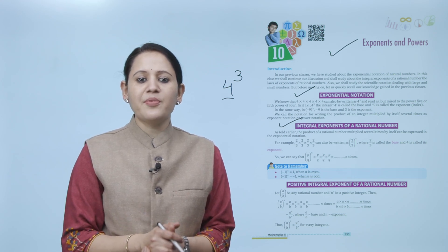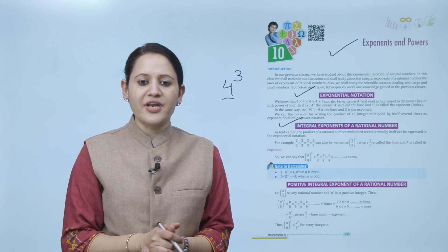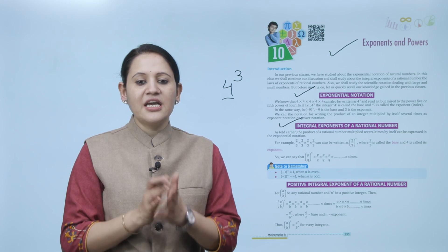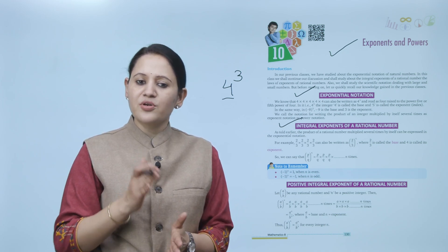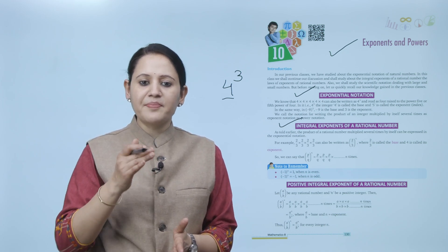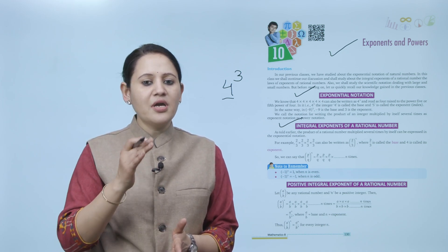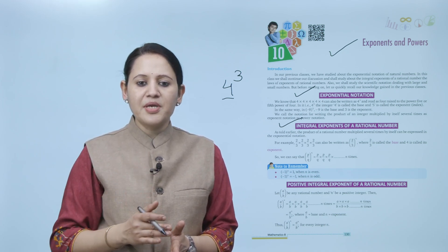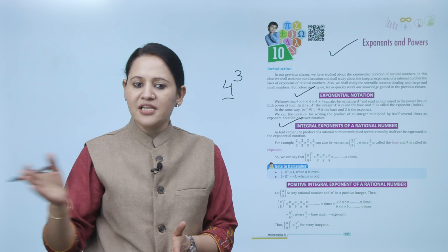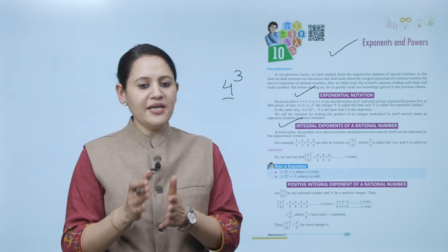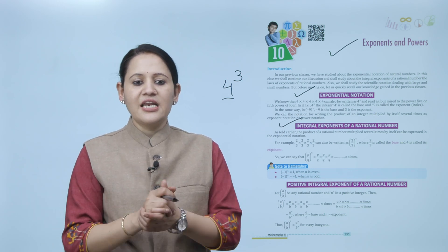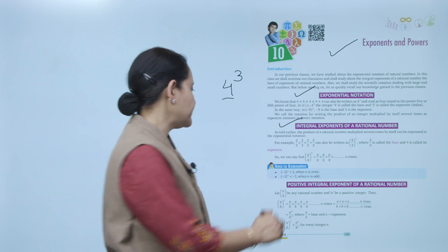So, in general, (P/Q) to the power n can be written as (P/Q) multiplied by (P/Q) multiplied by (P/Q) ... n times, because the power is n.